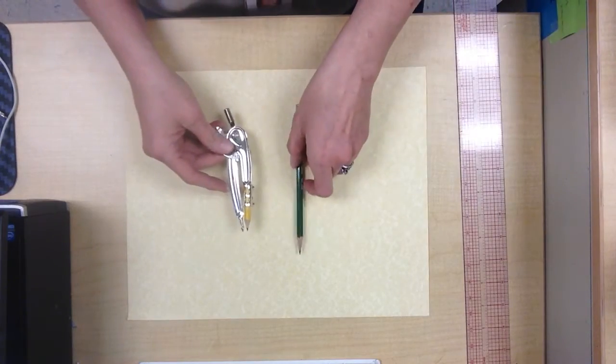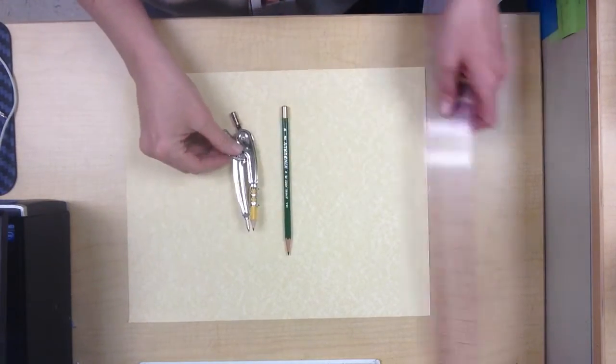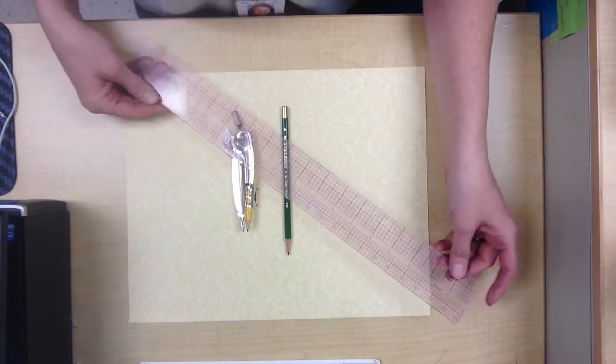The materials that you're going to need are a pencil, a compass, and a nice long ruler.